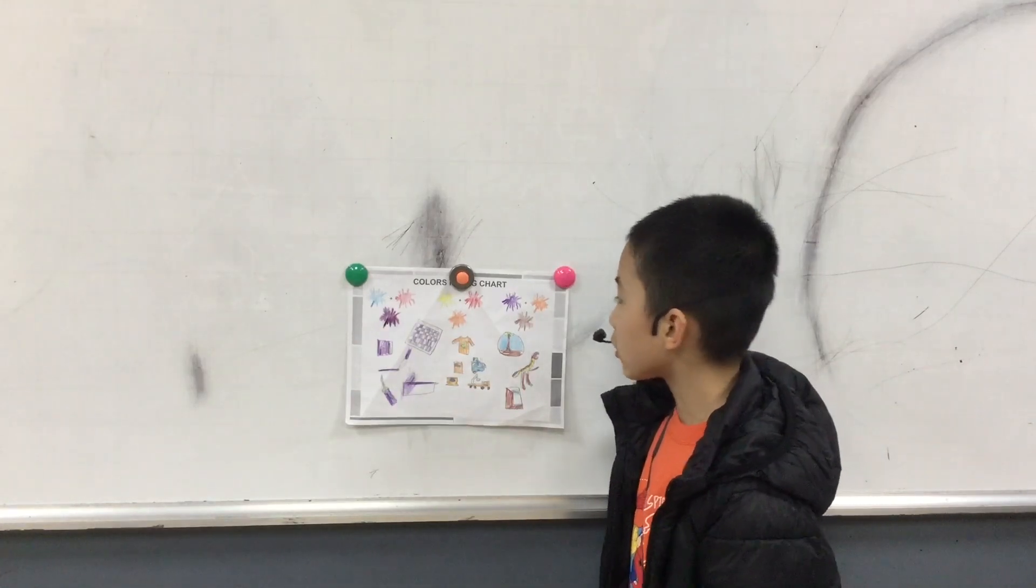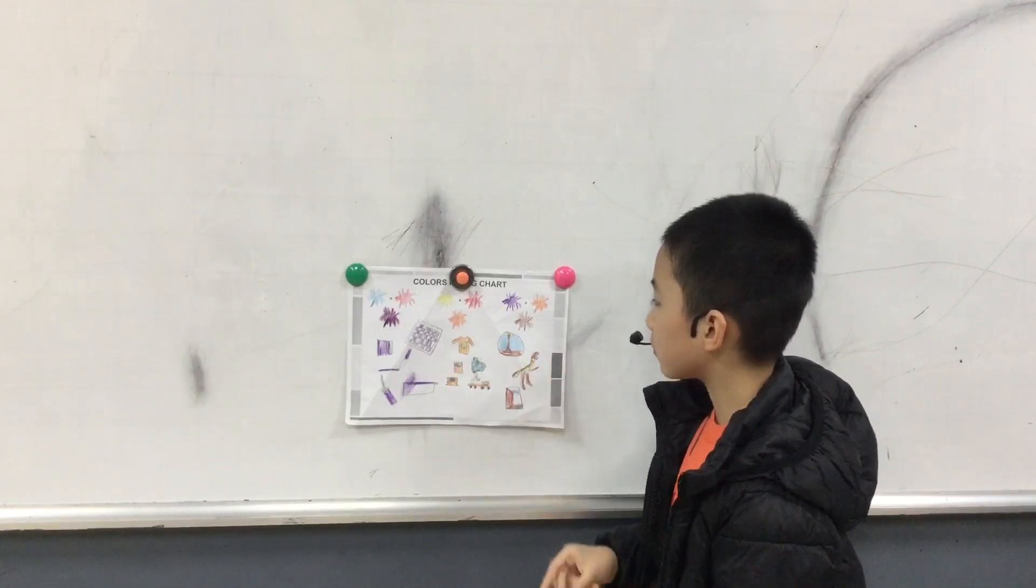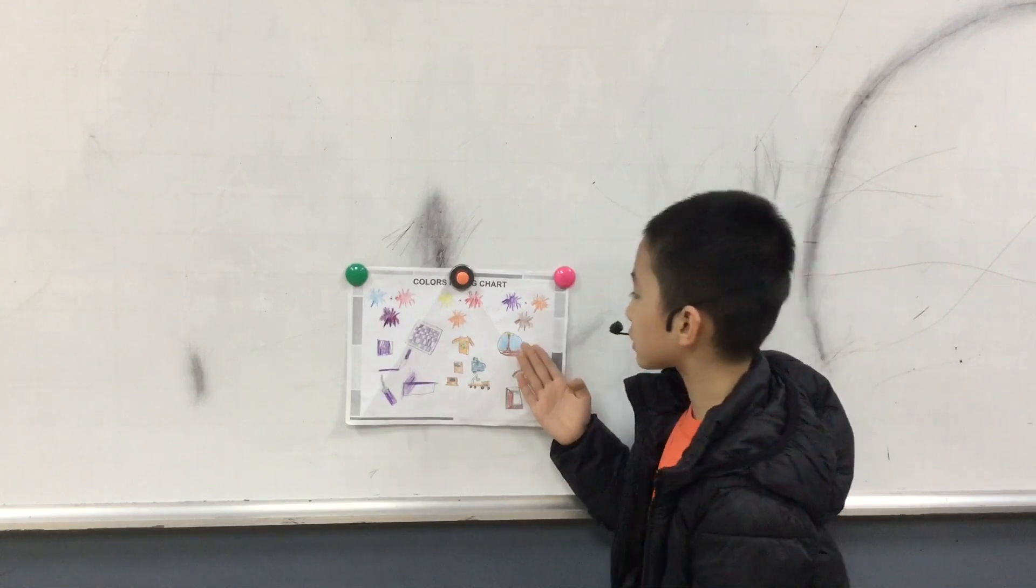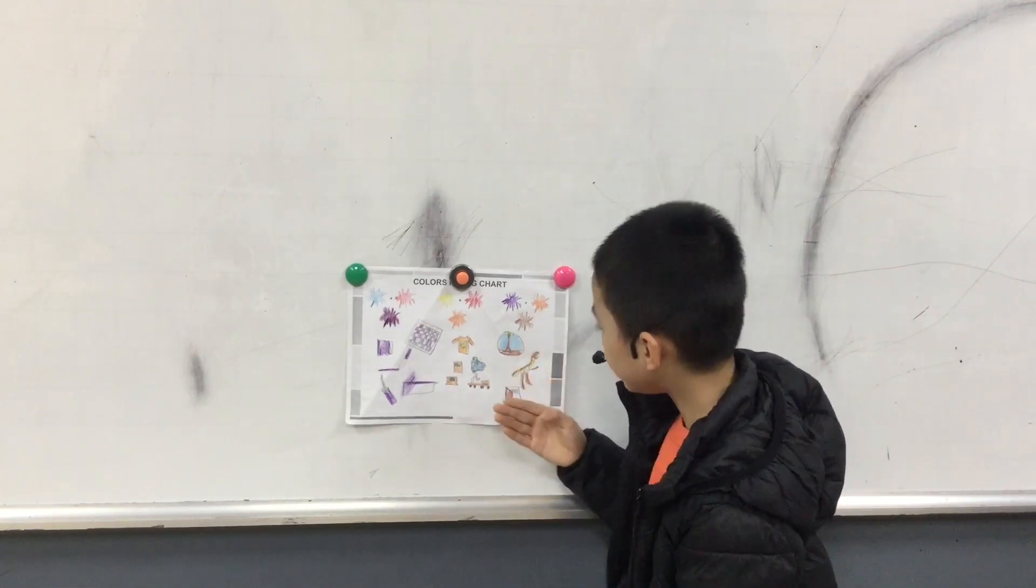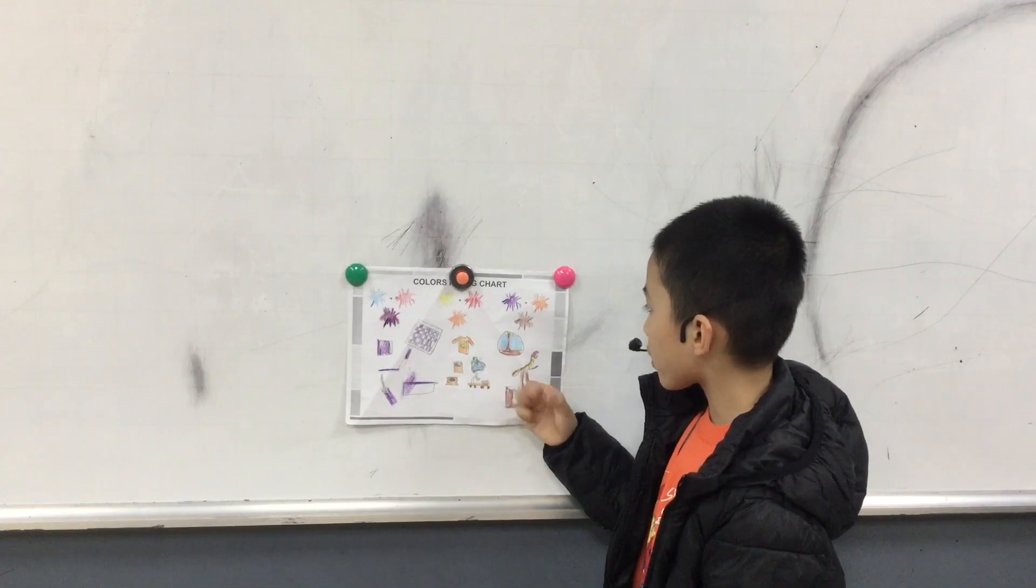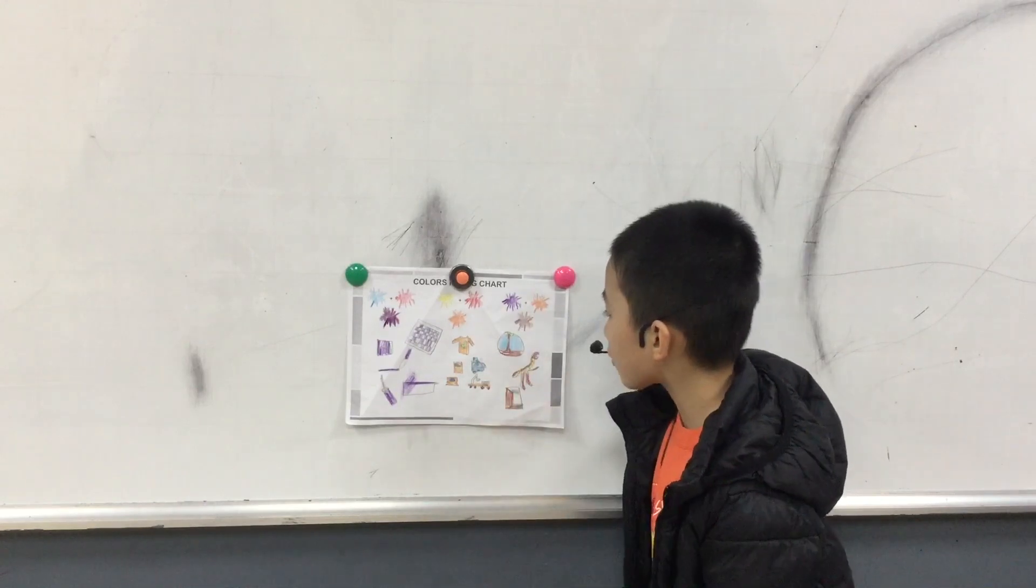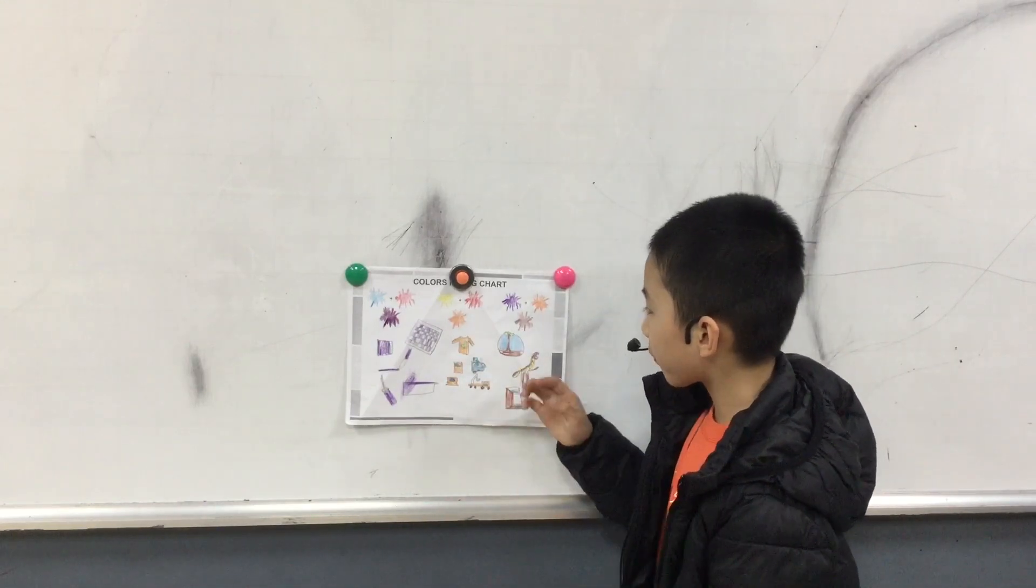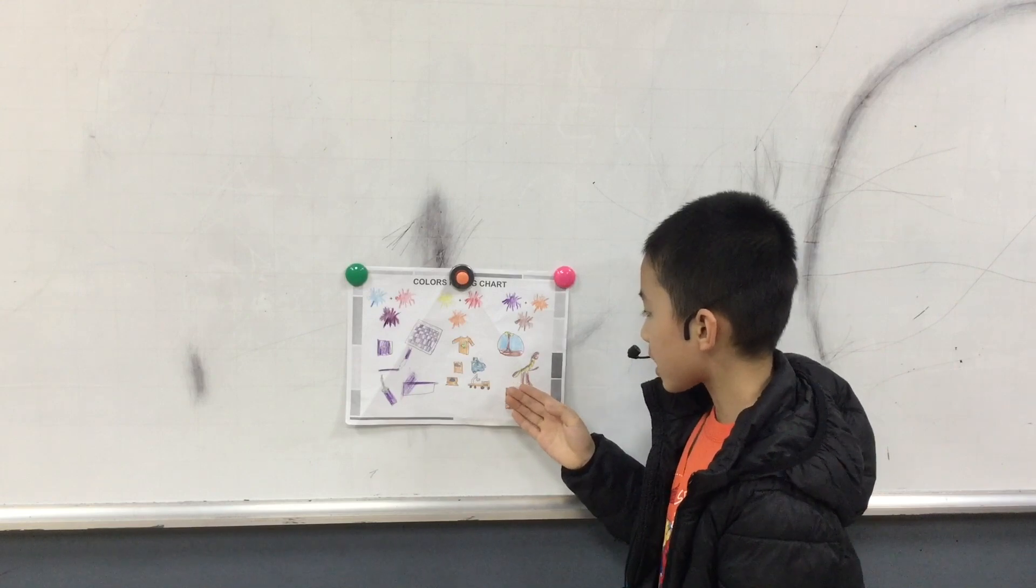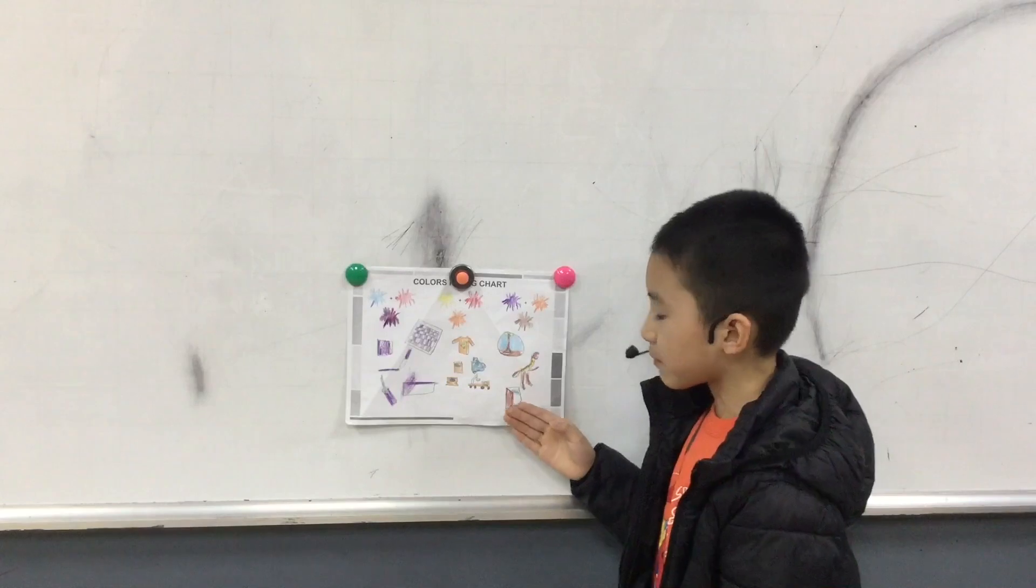The third color is brown. Brown is a secondary color. I can find brown in my tree, my toy dinosaur, and my dog.